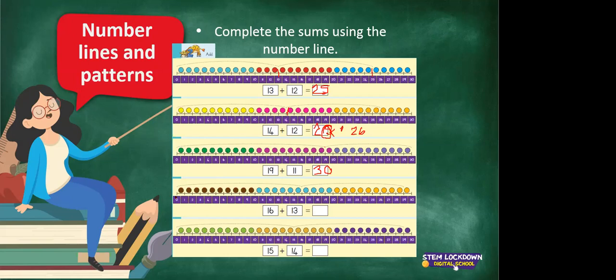Next one — always start from zero. Find 16 because the sum is 16 plus 13. We add on: 1, 2, 3, 4, 5, 6, 7, 8, 9, 10, 11, 12, 13 — here on 29. Then you leap, make the frog jump to the two numbers. And the answer is 29.